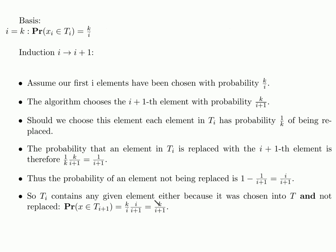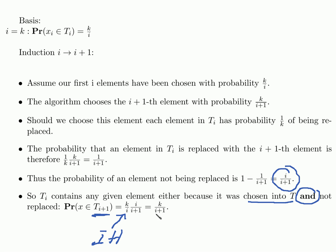So ti contains any given element either because it was chosen into t and not replaced. For an element to be in our sample t_{i+1}, we first have to have chosen it — this we have done with probability k over i, our induction hypothesis — and then we have to not have replaced it, which occurs with probability i over i plus 1. This product equals k over i plus 1, and this is true for every item in our sample. So every item in t_{i+1} is there with probability k over i plus 1.